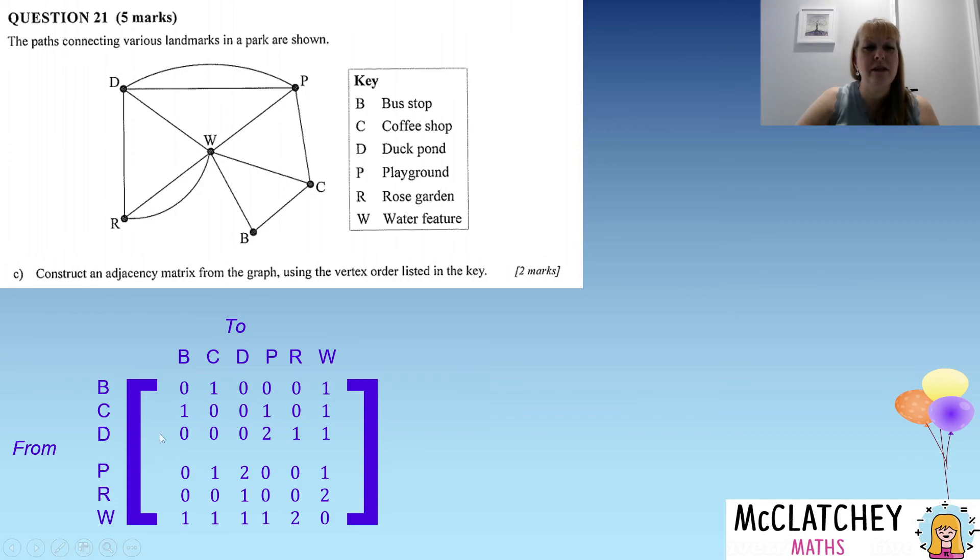You can see that some numbers are coming up as twos. For example, we can see down here from D to P, there are two pathways. We can check that: from D to P, we can see there's that second pathway there. We've got another one here from R to W. So if we look here, R to W, there's two pathways to get there. So you may have numbers that are not just zeros and ones in an adjacency matrix.